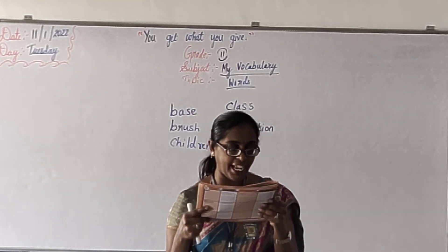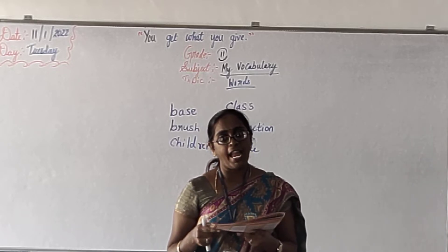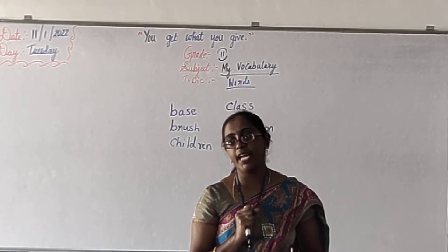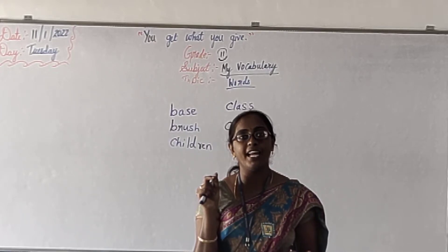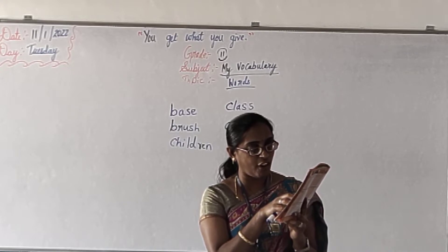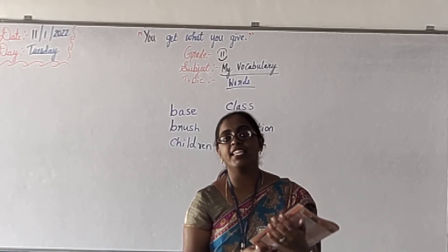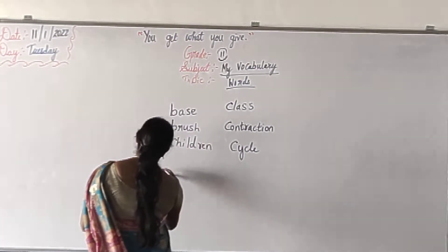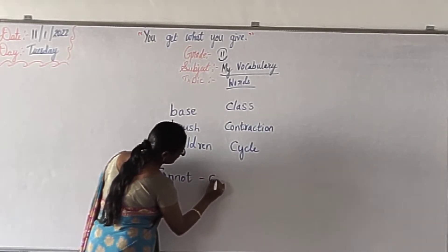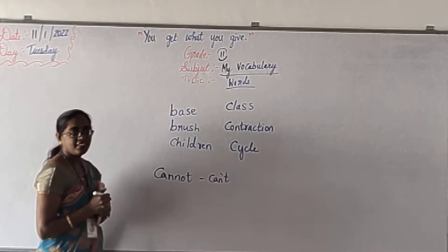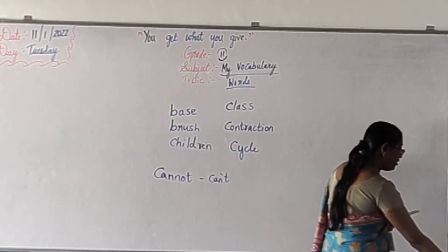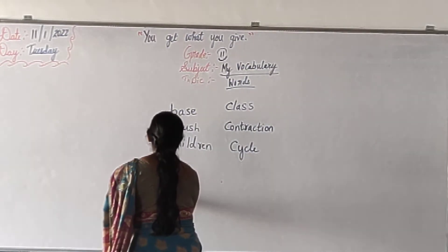Next what we have? Contraction. What is the meaning? A shorter form of a word or words. Short words are called contractions. Sentence: can't is a contraction of cannot. Cannot — you can write it as can't. That is the contraction. Write down the contraction in the blank.